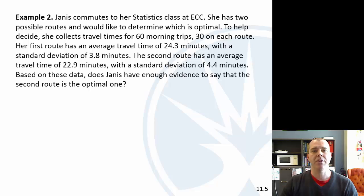Alright, next one we have Janice is commuting. She's got two possible routes. She collects travel times for 30 different trips on each route. And first route has an average time, second route, does Janice have enough evidence to say that the second route is the optimal one?